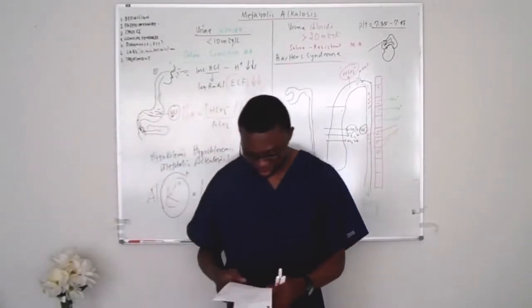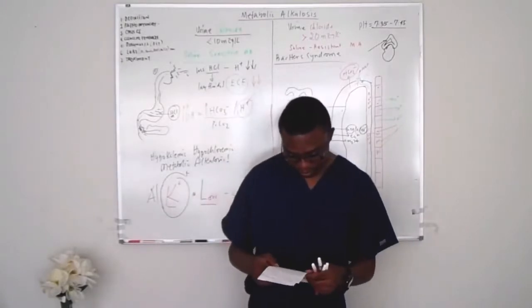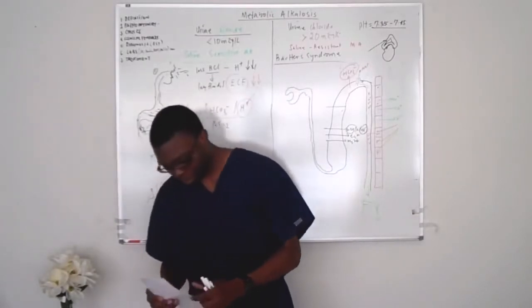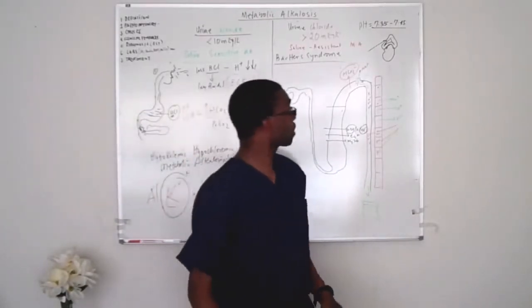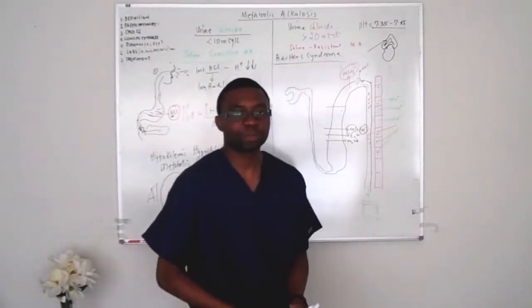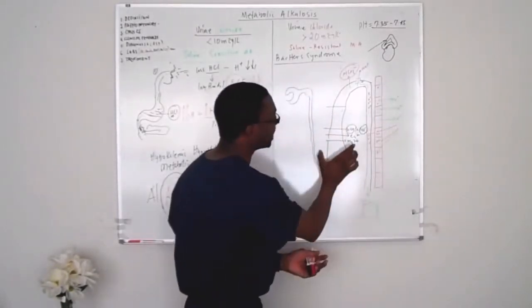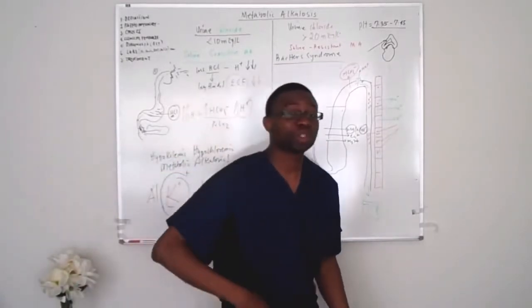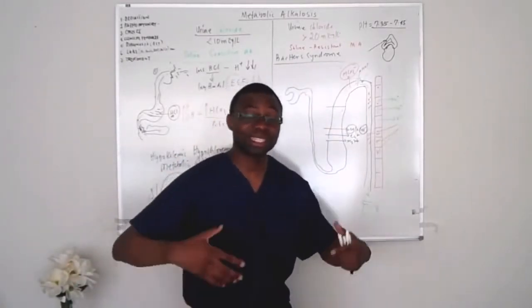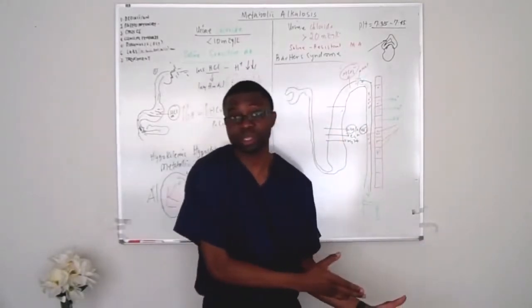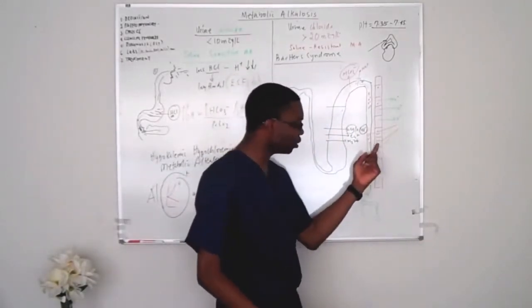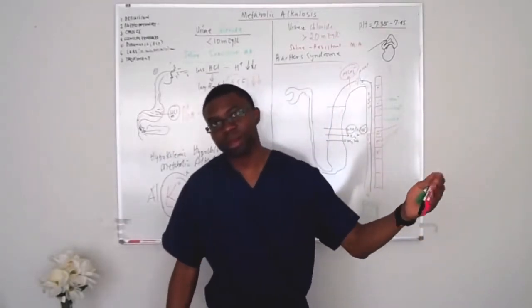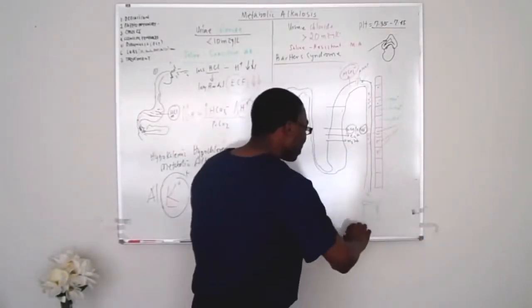So Bartter syndrome is basically the inability of the kidney to reabsorb sodium and chloride at the thick ascending loop of Henle. You lose so much sodium and chloride, which goes straight to your urine. The renin-angiotensin system activates again due to decreased perfusion to the kidney, aldosterone kicks in, you lose potassium, you lose hydrogen ions, bicarb goes up, pH goes up. That is the pathophysiology of Bartter syndrome in short.